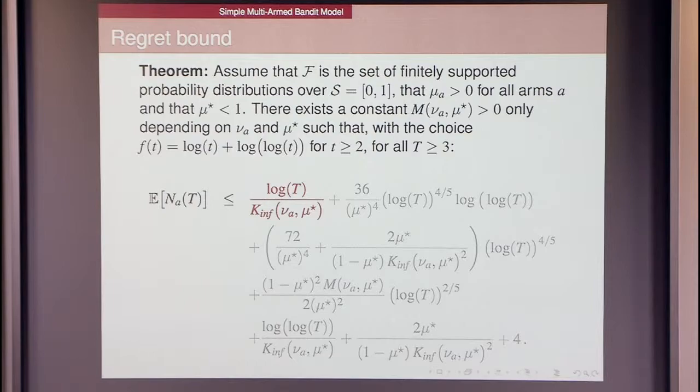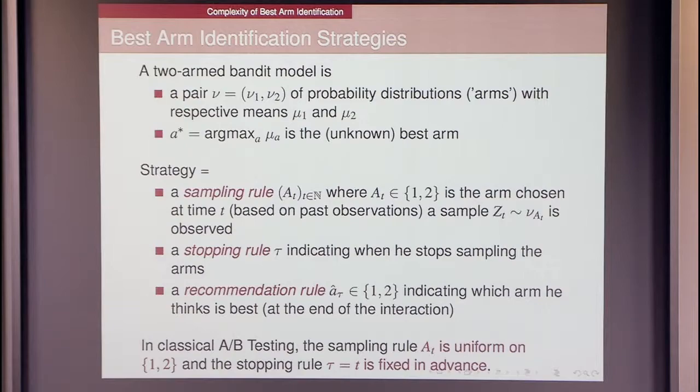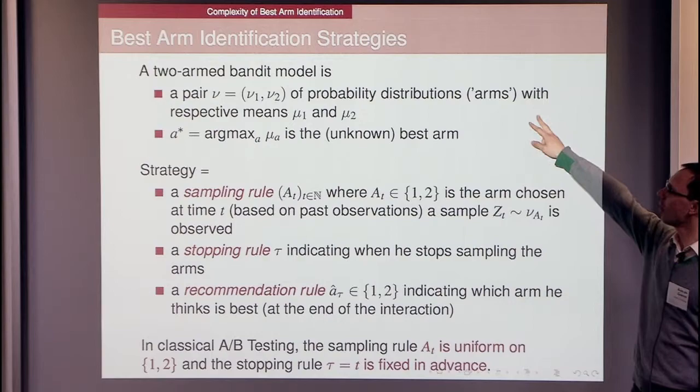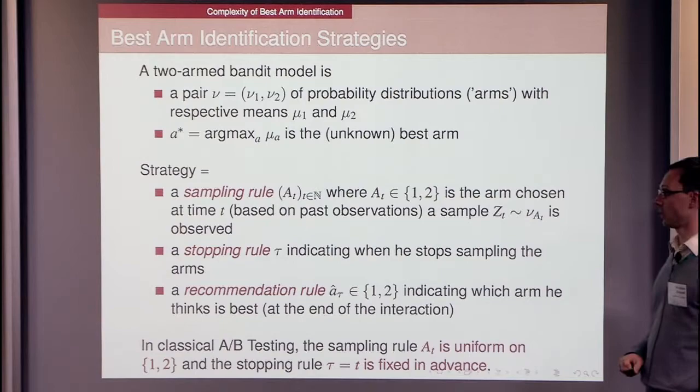What I wanted to present today is a slightly different problem, best arm identification. That is the case where you don't care about the patients you have in your study. You just want to be able to save the next patient, the future patient, the president, whoever you want. You want to save this additional guy with the highest probability, just this one. The other ones you can use just to try as you want. This time, for the presentation, we will only focus on a two-armed bandit model. One of them is better than the other in terms of expected reward, and you want to know which one it is.